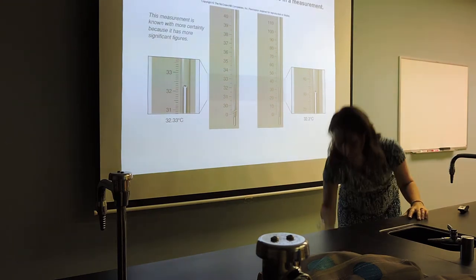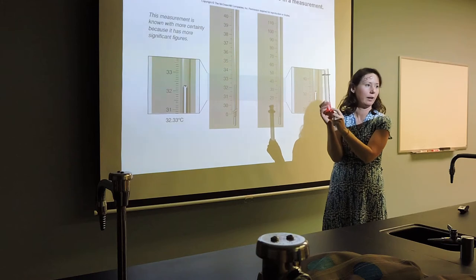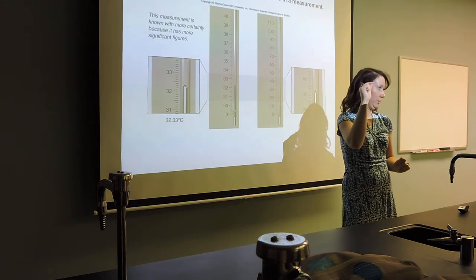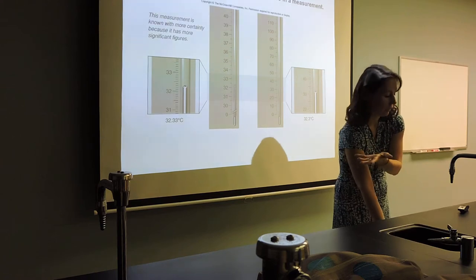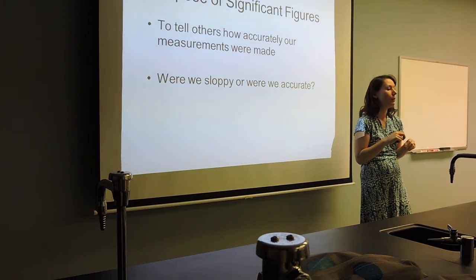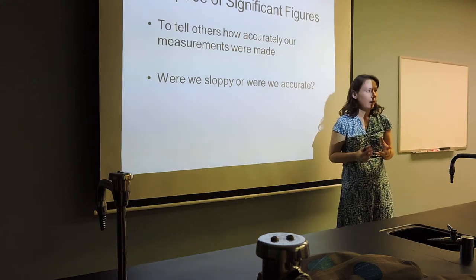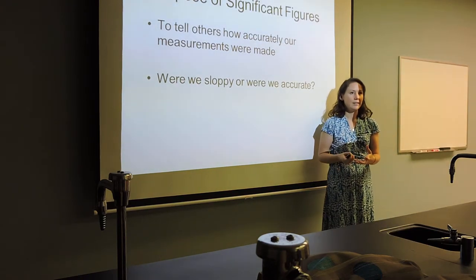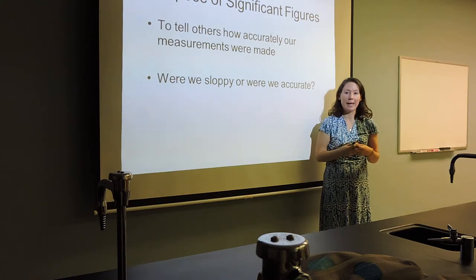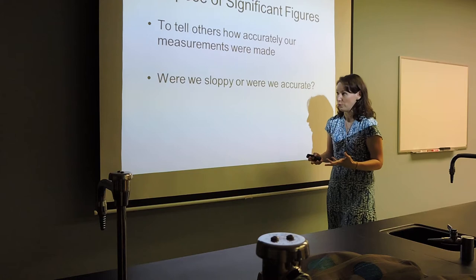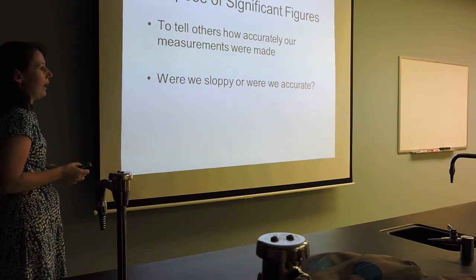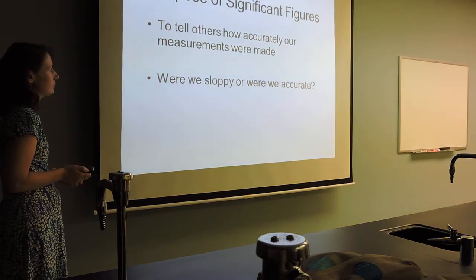If I'm using something like a graduated cylinder, that's got significantly less guesswork because it's ticked off every one. And then when we use burettes, those are calibrated in tenths. So the less guesswork involved in your measurement, the more accurate it is. That's the purpose of using significant figures — to tell others how accurately did I make my measurement, what piece of equipment was I using. For us as chemists, the piece of equipment dictates the accuracy.